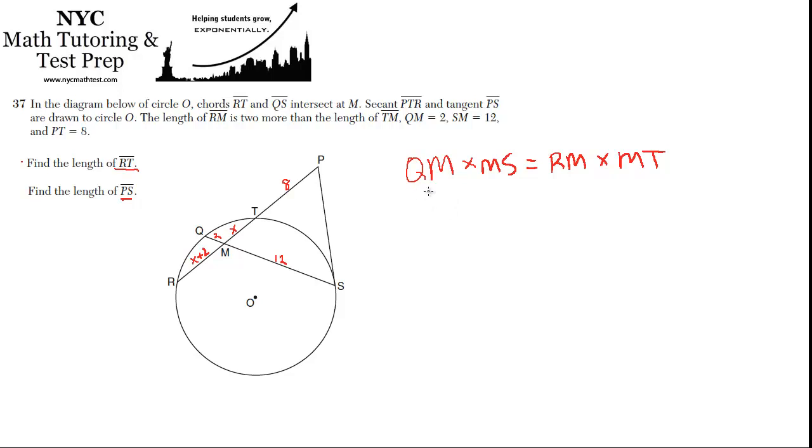So what is QM? QM is 2. And that's being multiplied times 12, MS. And RM we called it X plus 2 because it's two units longer than TM. And that's being multiplied times TM or MT, which is X. And now we have an algebra problem on our hands.